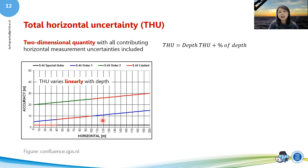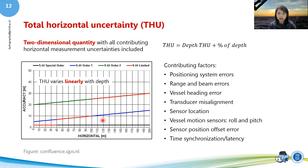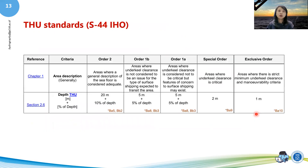The contributing factors are: your positioning system error, range and beam, vessel heading, transducer, and sensor location. Everything on this list will affect your THU. The total of each error must be smaller than your standard THU.